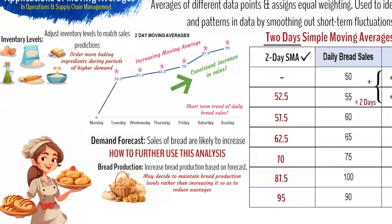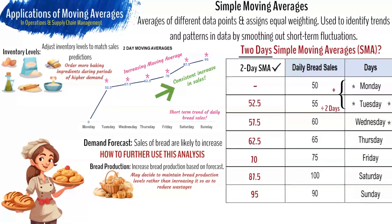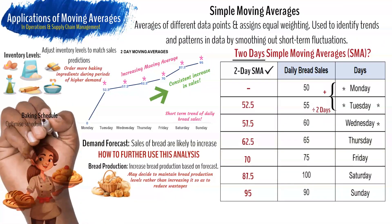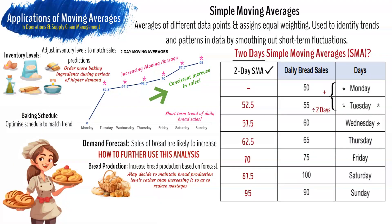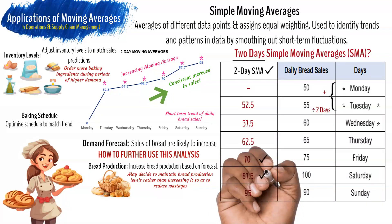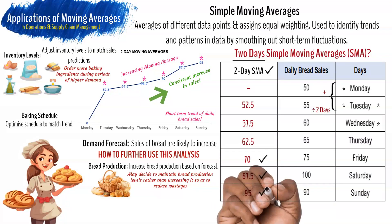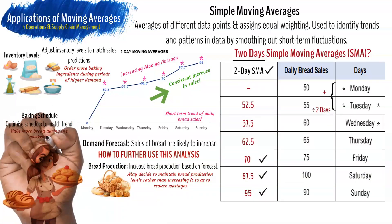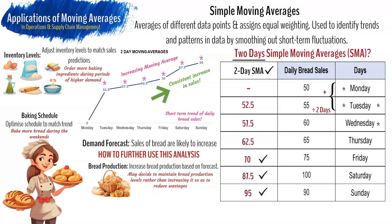This data could also be used to forecast baking schedules. The baker could optimize their baking schedules based on the sales trend. If the simple moving average indicates higher sales on specific days such as weekends, they can plan to bake more fresh products to meet expected demand while minimizing waste and loss of business. These are a few examples of ways the baker could use simple moving averages.